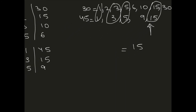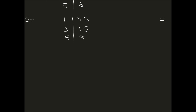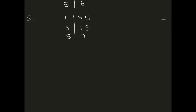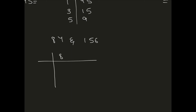The listing method can be exhausting for bigger numbers. For example, finding the HCF of 84 and 156 — we form a table and write 84 and 156 next to each other. Both are even numbers so we divide by 2, the lowest prime factor. If you don't know what a prime number is, check my video on prime and composite numbers.